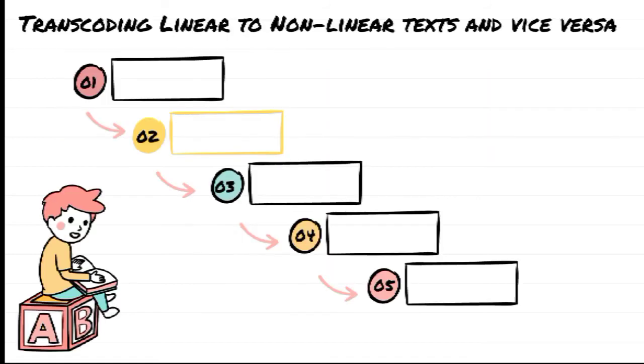Let's have these steps on transcoding linear to non-linear text and vice versa. First, to transcode means to transform something from one form to another. In order to transcode linear to non-linear text or the other way around, one must first be able to fully understand what the source text is about. This way, deciding on the proper text type to be used in the transcoding process will be easier.